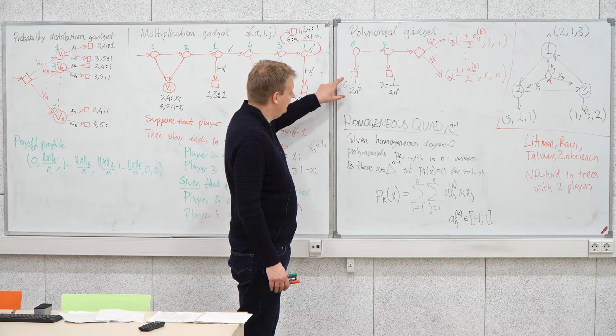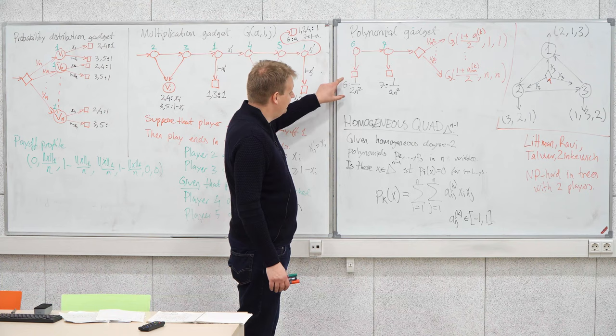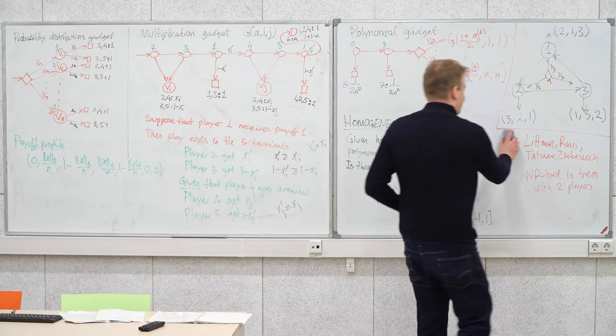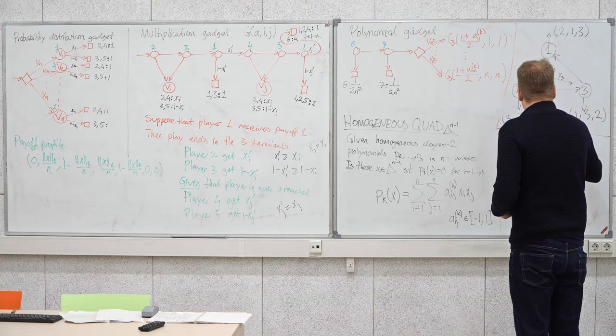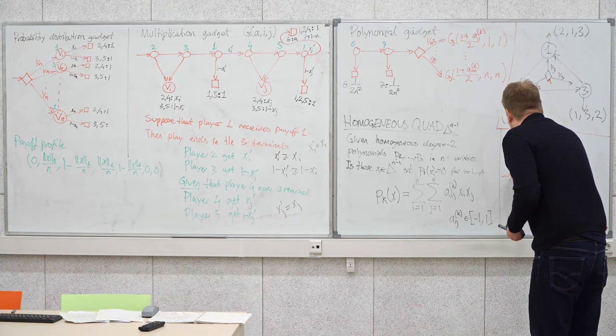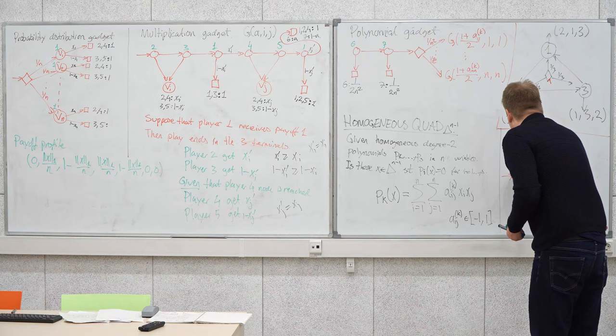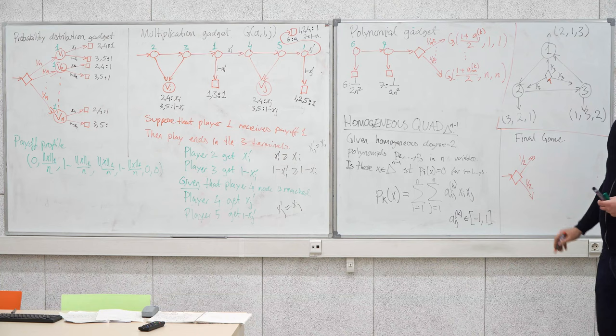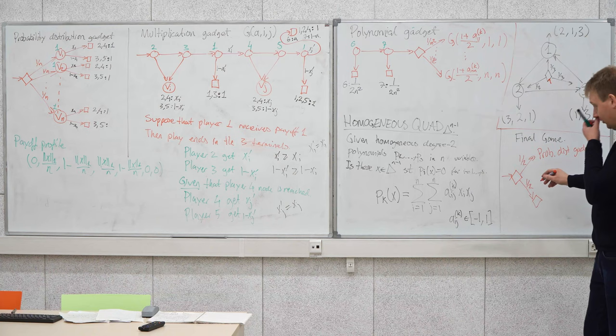For the final game, we piece together the two games. We start at a chance node and make a 50-50 split: one branch goes to the probability distribution gadget, and the other splits into s many nodes with probability 1/s each, one for each polynomial gadget.